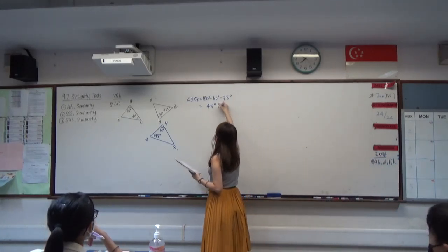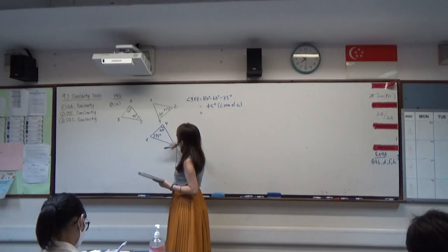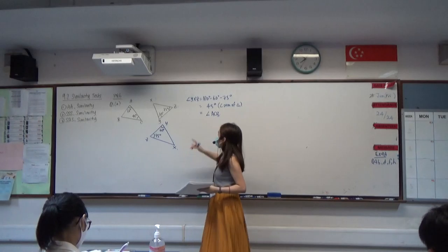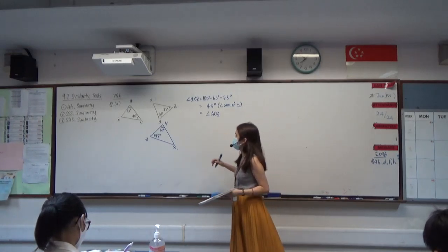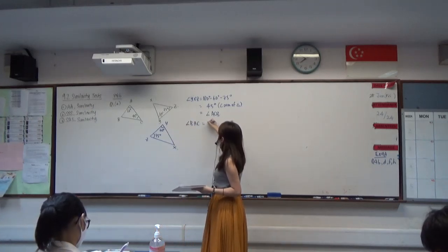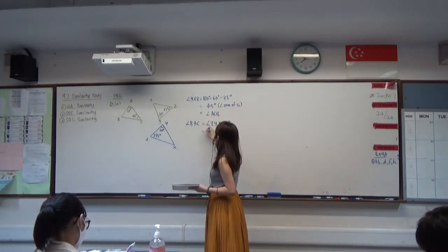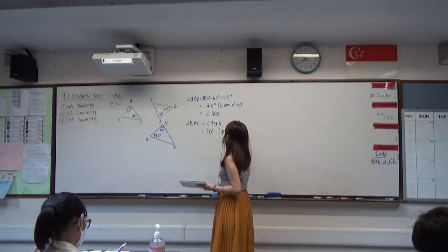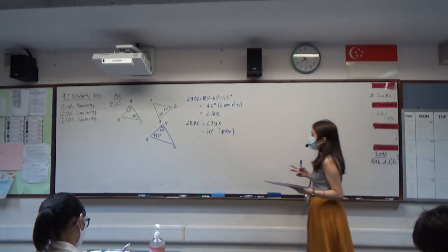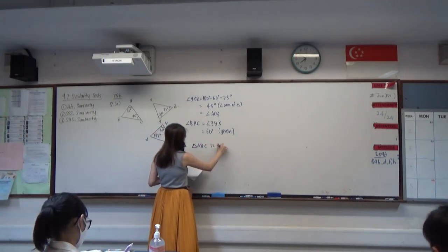Since angle y exact is actually equal to angle ACP, we write it down. Then after that, we also recognize that angle BAC is equal to angle ZYX, which is 60 degrees, and that is given. So we have two given angles that are actually equal to each other, and therefore we can apply our AA similarity test and conclude that triangle ABC is similar.